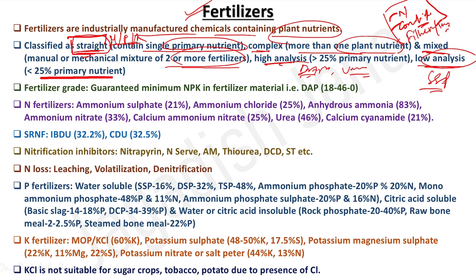Fertilizers are also categorized by nutrient type: nitrogenous, phosphatic, or potassic. Nitrogenous fertilizers are further classified as nitrate, ammoniacal, amide, or both nitrate and ammoniacal. Fertilizer grade refers to the guaranteed minimum percentage of N, P₂O₅, and K₂O in a fertilizer material. Fertilizer ratio refers to the ratio of NPK in the fertilizer, such as 2:1:1.